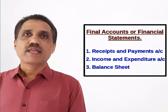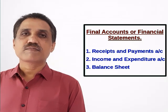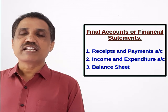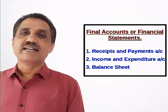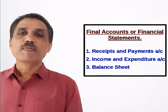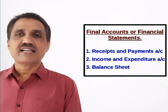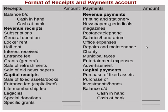As you learned, a not-for-profit organization maintains a receipt and payment account, income and expenditure account, and a balance sheet as their financial statements or final accounts. A receipt and payment account has two sides. Its debit side is called receipt side and credit side is called payment side.